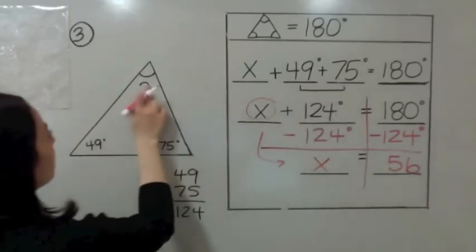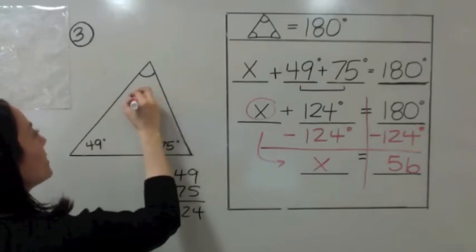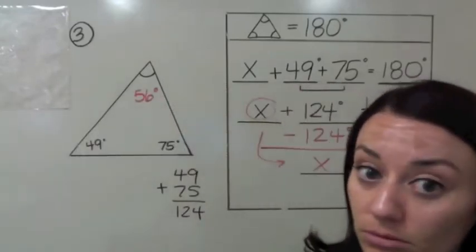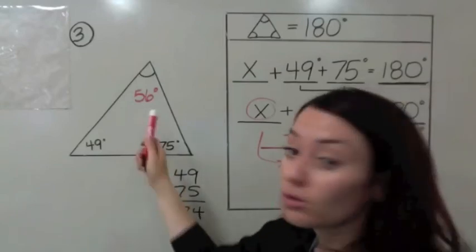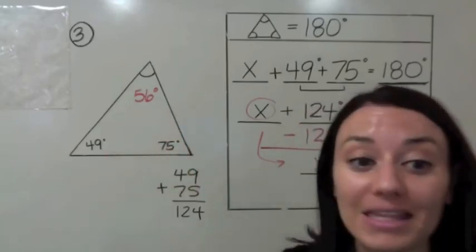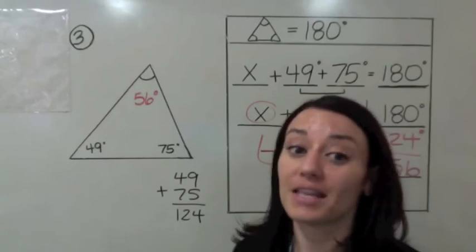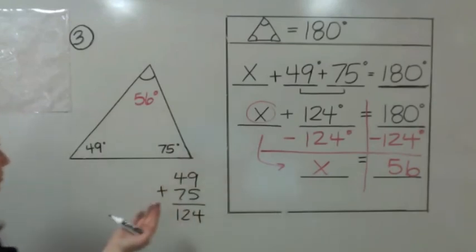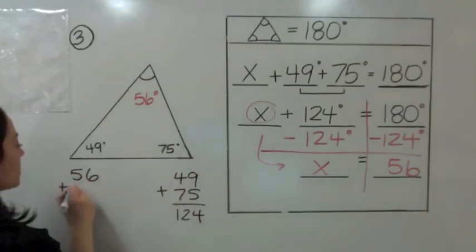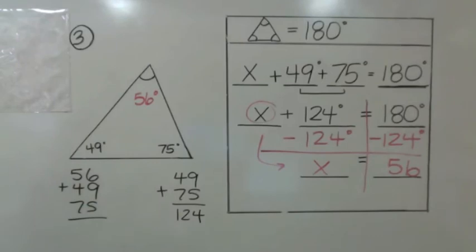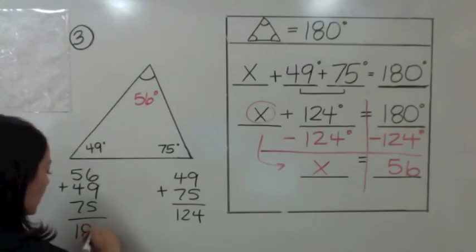So this angle, next to that question mark, is 56 degrees. Is 56 degrees an acute angle? Yes. So this is an acute triangle, which means all of the angles are less than 90. Let's prove it: 56 plus 49 plus 75 in our calculator gives us 180 degrees. See how it works?